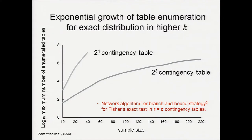However, there is a bottleneck: the number of tables you have to enumerate increases exponentially when K equals four or higher. Even though there are approaches using dynamic programming or branch-and-bound strategies for enumeration, they are only suitable for the R by C contingency table. There is no algorithm that can efficiently enumerate all tables for the 2^K contingency table.